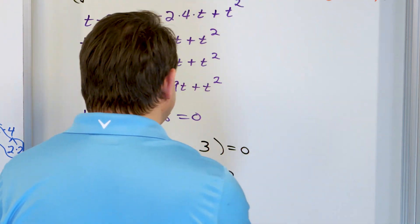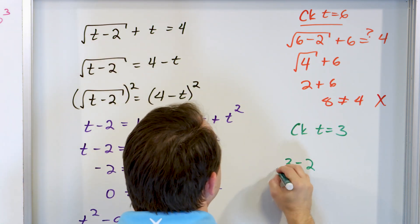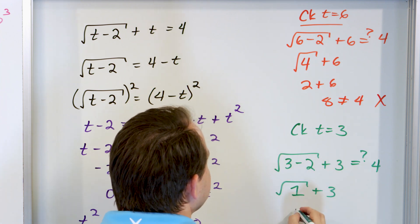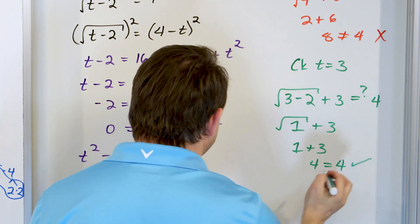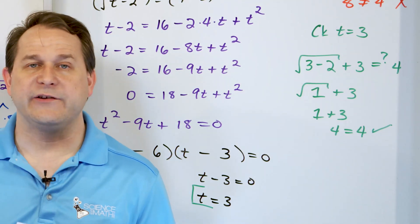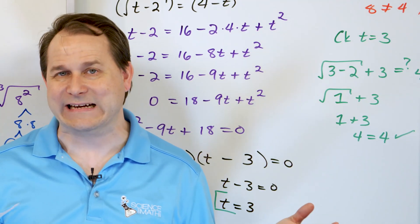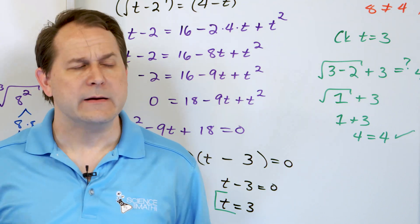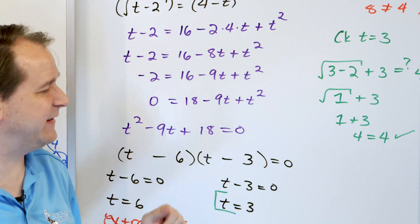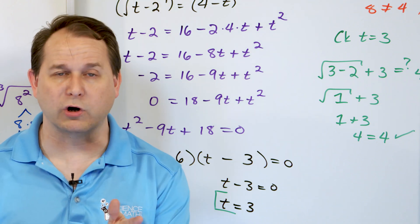Now try t equals 3: the square root of (3 minus 2) plus 3 equals question mark 4. That's the square root of 1 plus 3, which is 1 plus 3, which equals 4. So t equals 3 is a correct solution. There is really no way to predict ahead of time if your equation is going to have extraneous solutions. You have to follow the rules of algebra, squaring or cubing both sides as needed. Sometimes you get one answer — which should always be correct. Sometimes you get two or more, and you have to check them all for extraneous roots. Make sure you solve these yourself, and we will continue learning how to solve more and more complicated radical equations.